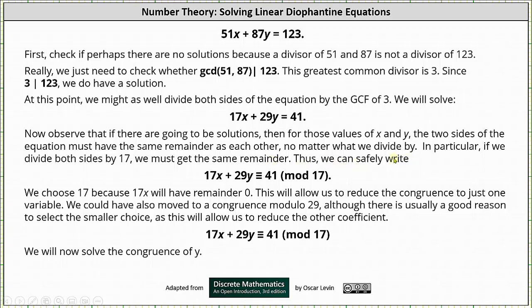Thus we can safely write 17x + 29y ≡ 41 (mod 17). We chose 17 because 17x will have a remainder of 0 with modulus 17. This will allow us to reduce the congruence to just one variable. We could have used congruence mod 29, although there is usually a good reason to select the smaller choice, as this will allow us to reduce the larger coefficient.